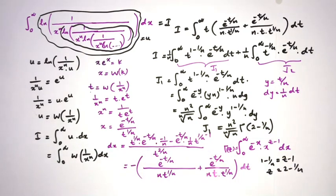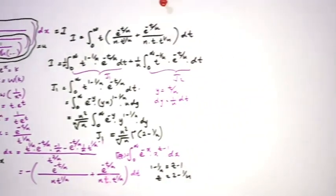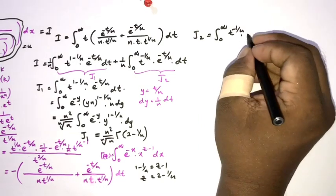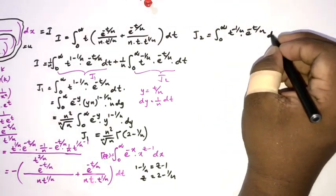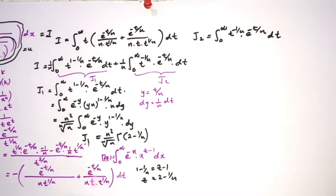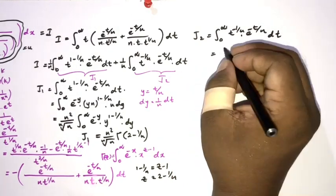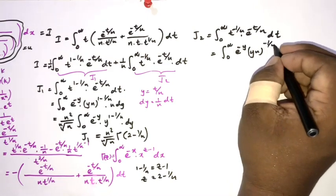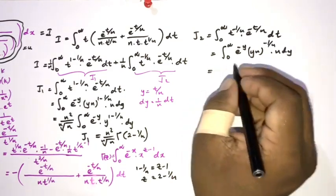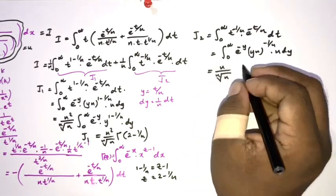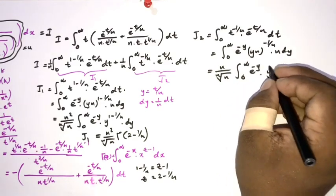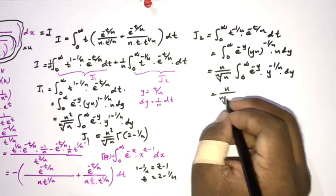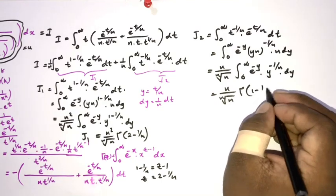Then for j2: using the same substitution, j2 equals n over the nth root of n times the integral from 0 to infinity of e to the minus y times y to the minus 1 over n dy. Applying the gamma function again gives j2 equals n over the nth root of n times gamma of 1 minus 1 over n.